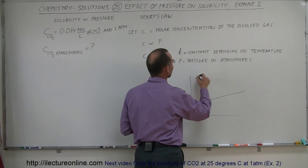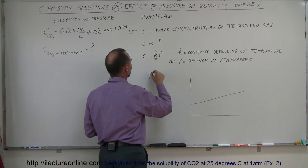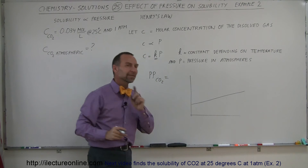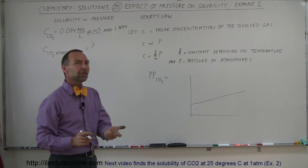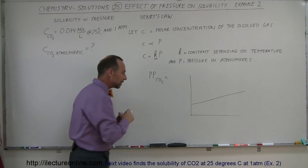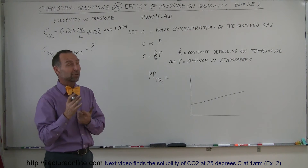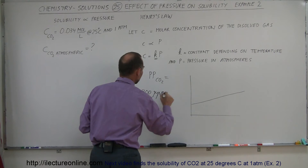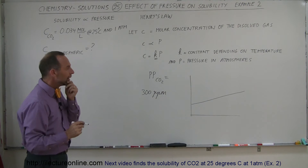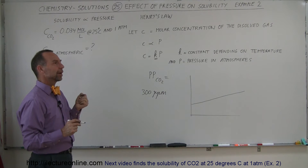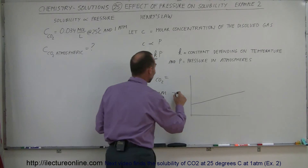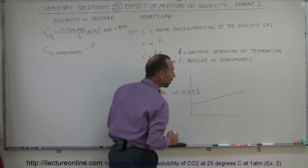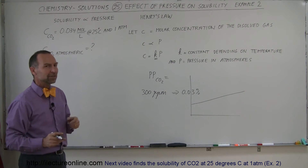So we can say that when the Industrial Revolution started, the partial pressure of carbon dioxide was — back in the beginning of the Industrial Revolution — the amount of carbon dioxide in the atmosphere was about 300 parts per million. That translates to 0.03% of the atmosphere was carbon dioxide.